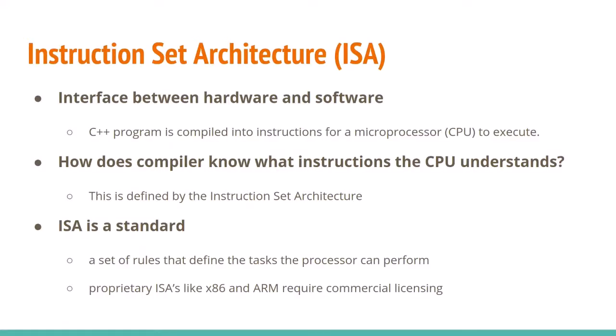I wanted to talk about RISC-V today. It's an instruction set, or ISA — the interface between hardware and software. For example, a C++ program gets compiled into instructions for the processor to execute, but how does the compiler know which instructions the CPU understands? This is defined by the instruction set architecture. Proprietary ISAs like x86 and ARM require licensing, so you can't just use them. RISC-V is a free and open source instruction set.